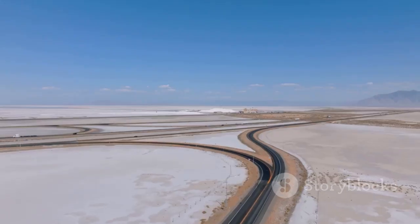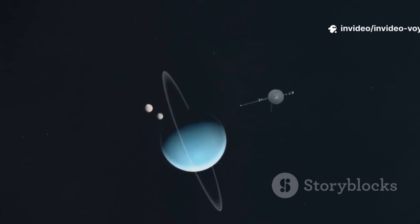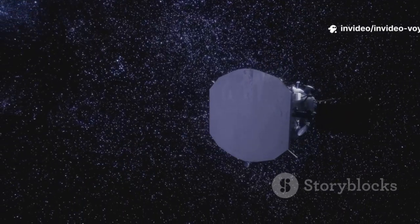What if your road was not a street or a highway, but the endless star-dusted blackness of interstellar space? For one machine, this is reality. It is a lonely traveler named Voyager 2.